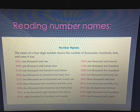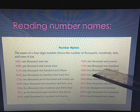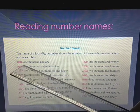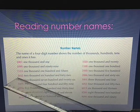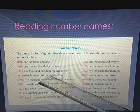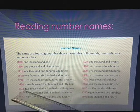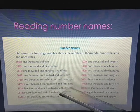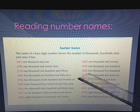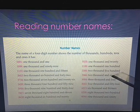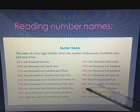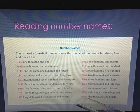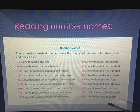Now, in your book page number 12, a few number names are given. I will read a few: 1001, then 2642, then 5934, then 2500, then 4052, and the last one is 9090.